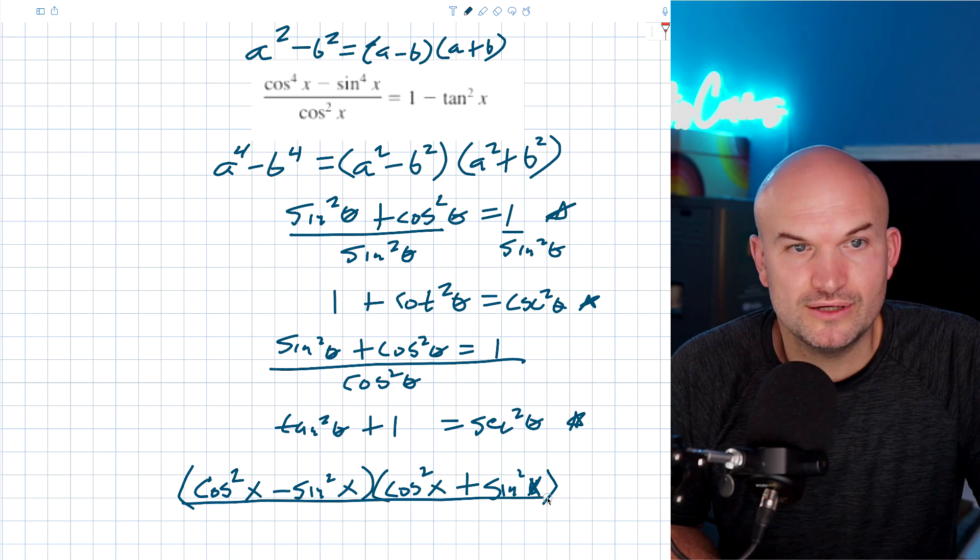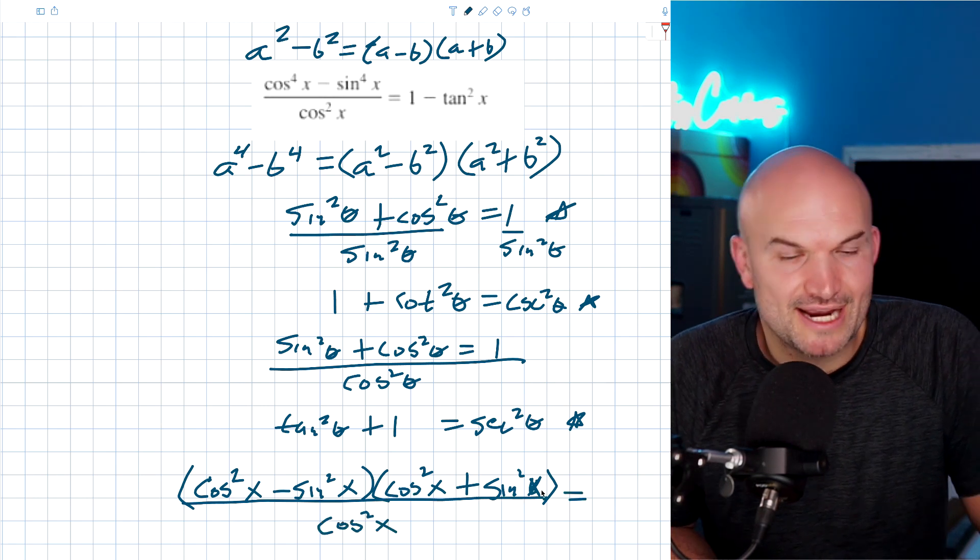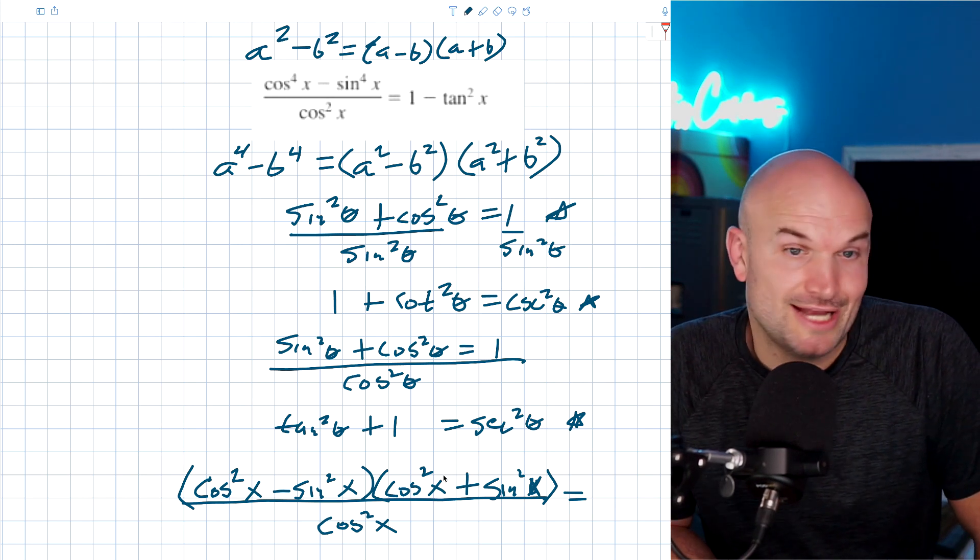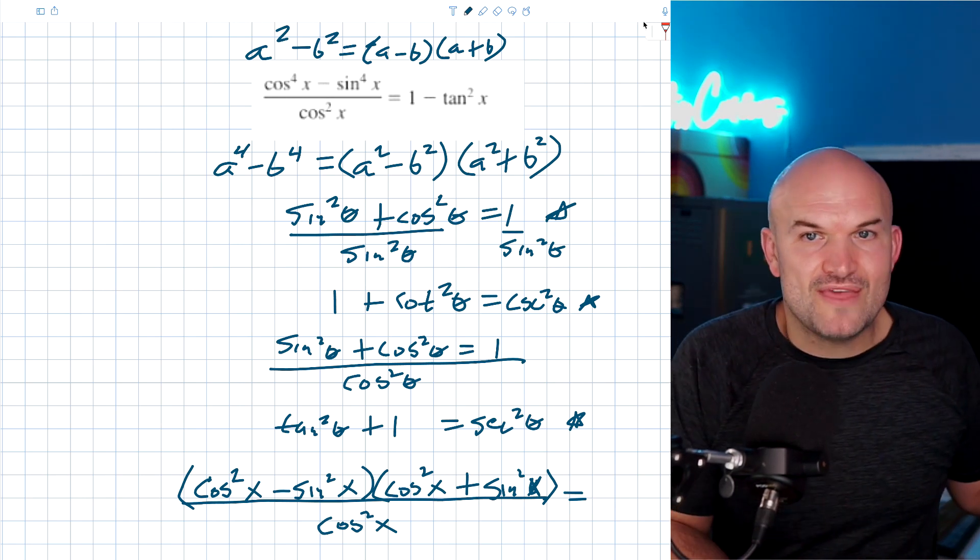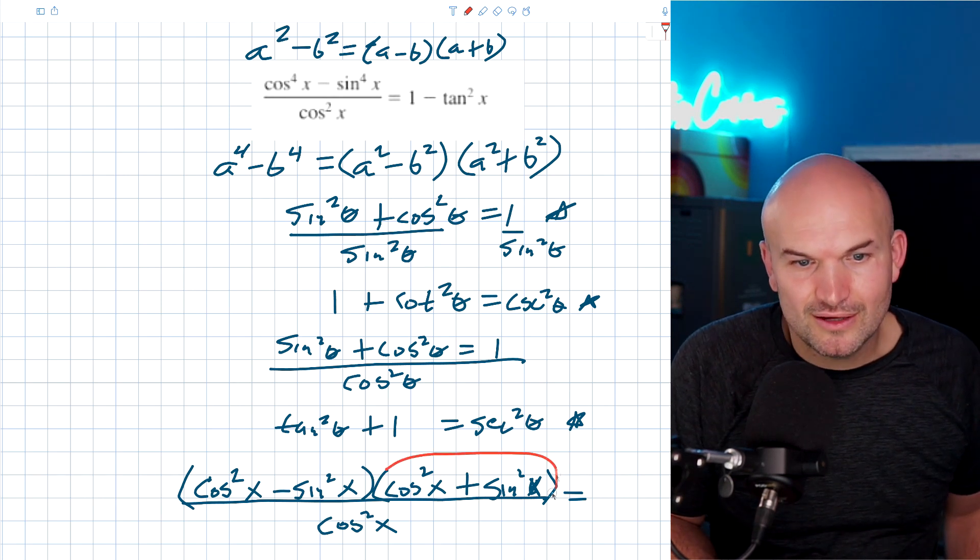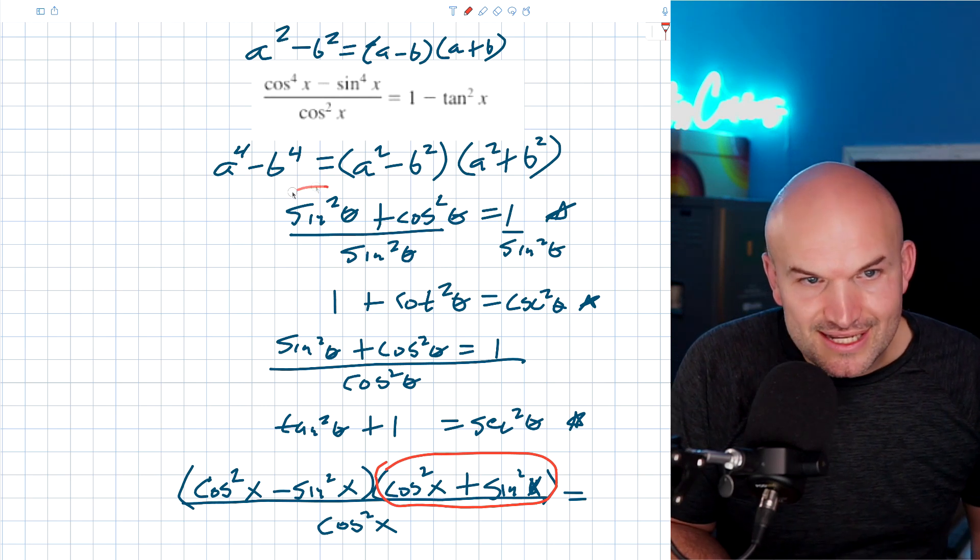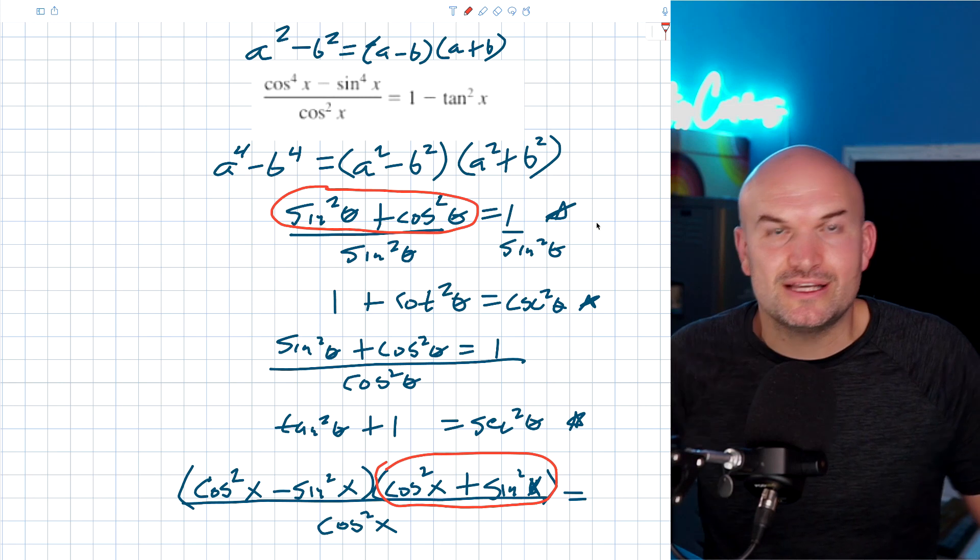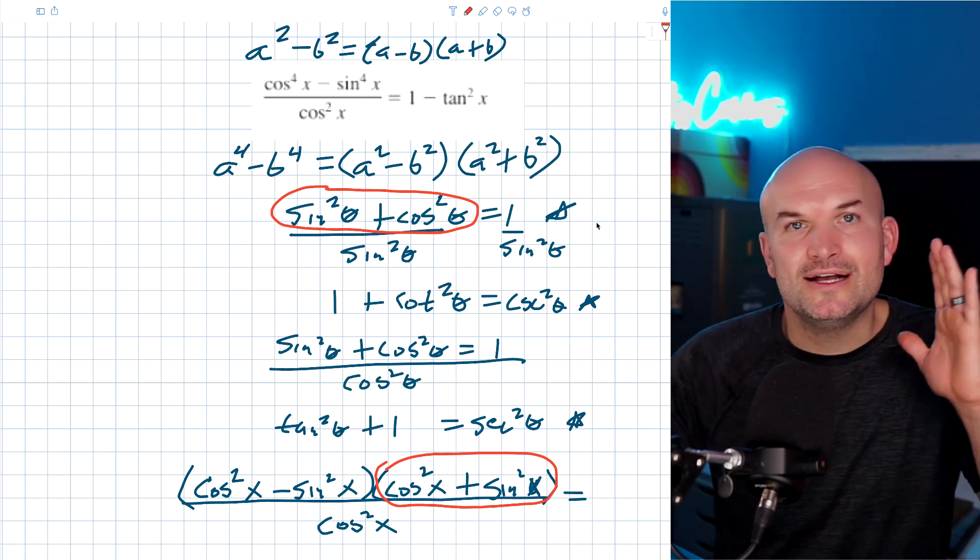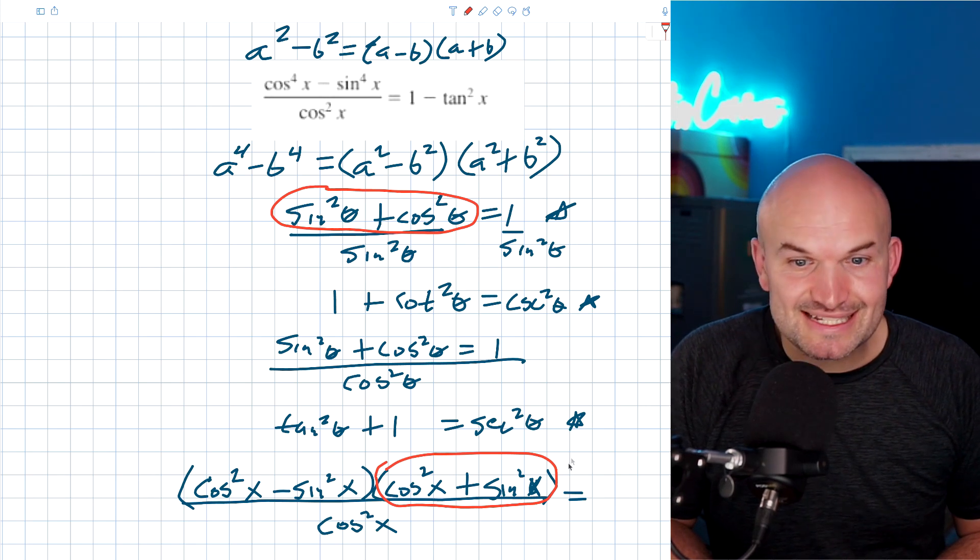Now, if you believe Pythagorean identities are really important and you know your Pythagorean identities, then you will recognize that, what is this? What is cosine squared of theta plus sine squared of theta? What is sine squared of theta plus a cosine squared of theta? It's one, guys, right? Commutative property of addition. It doesn't matter, you know, three plus four, four plus three. The order does not matter. So, guys, this is equal to a one.